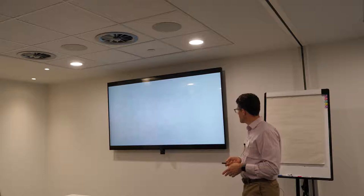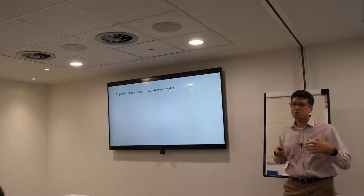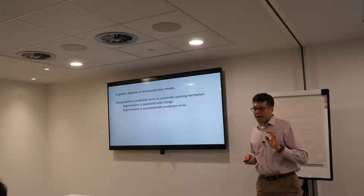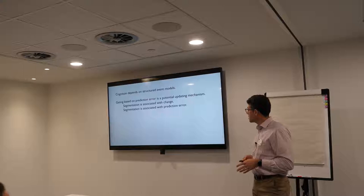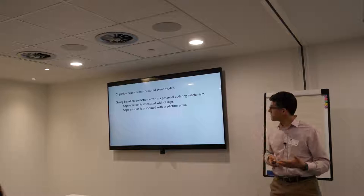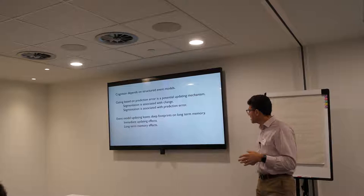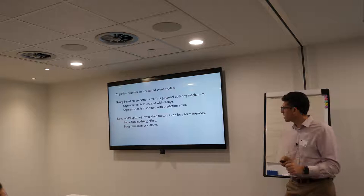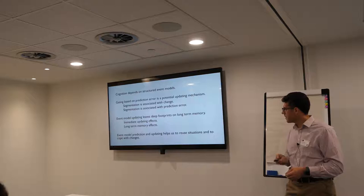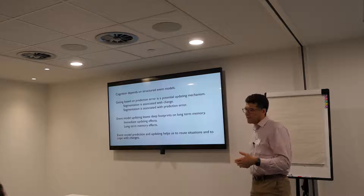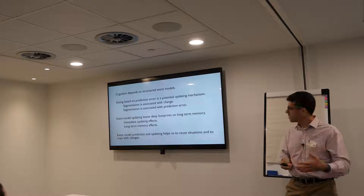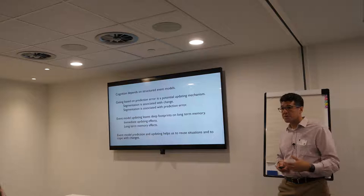To conclude: cognition depends on structured representations of events. A computational mechanism for building and updating these is gating based on prediction error, which entails that event boundaries occur when things change and when you experience prediction errors. Event model updating leaves deep footprints on long-term memory — both in the immediate updating of working memory and in the structure of long-term memory and its relation to perception. And one of the things this allows us to do is to better take advantage of the relationship between our systems for perceptual prediction and long-term memory, allowing us to deploy long-term memory in the service of better prediction.